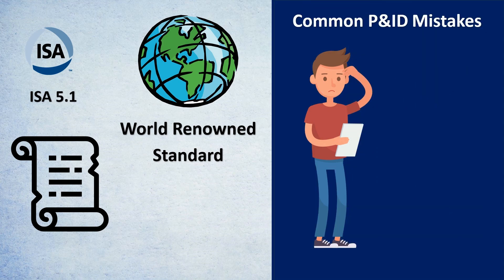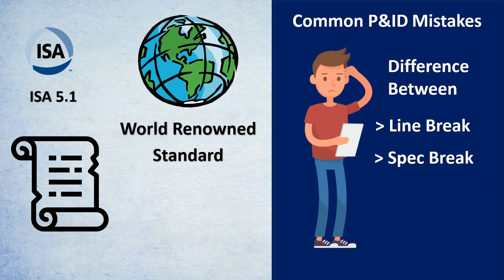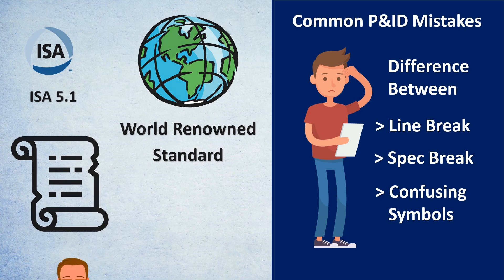And not just that, we will also cover what are the common mistakes that engineers make. For example, difference between line break, spec break, what are the confusing symbols for turbine flow meters, positive displacement flow meters, etc.